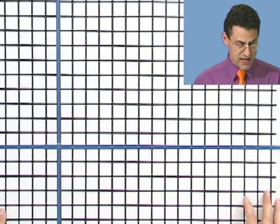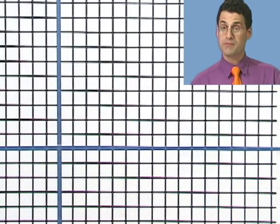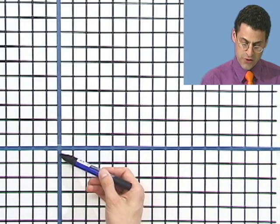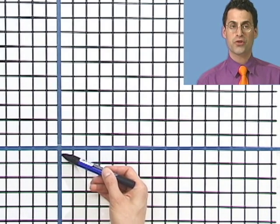So if I look at the graph of this, the y-intercept, now watch this, is going to be minus a third. Well, this is minus 1, so I'm actually only going to minus a third. So the y-intercept is actually a third of the way down.